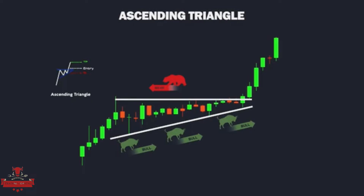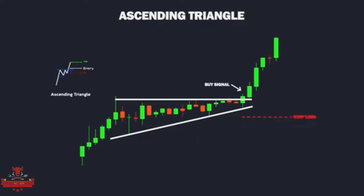The pair starts a consolidation phase at a certain point, failing to make new highs as it is rejected several times in the same area. The entry signal comes when the pair breaks above the triangle's upper side, triggering a rally. The profit target is set by taking the number of pips between the initial low of the triangle and the break level, adding that to the entry price. The pattern fails if price falls below the upward sloping trend line instead of breaking above the triangle.